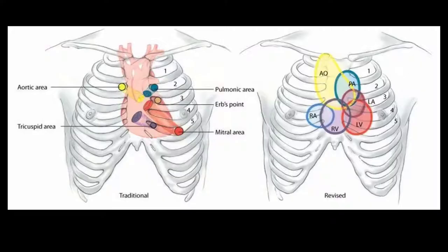Traditionally, you might have been taught that you perform auscultation over four areas of the precordium that roughly correspond to the location of the four valves of the heart. This leads to some misperceptions. Valves are not strictly located in these areas, nor are the sounds created by valvular pathology restricted to those spaces. While it might be okay to listen in just four places when conducting a normal exam, it is quite helpful to listen in many more when there are any abnormal sounds that you hear.